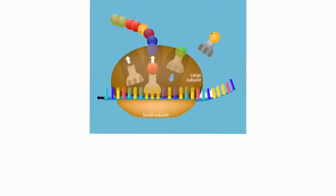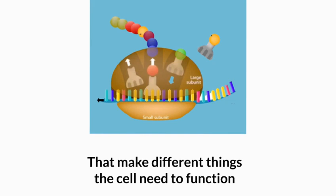Ribosomes: Ribosomes are like tiny factories that make different things the cell needs to function, like proteins.